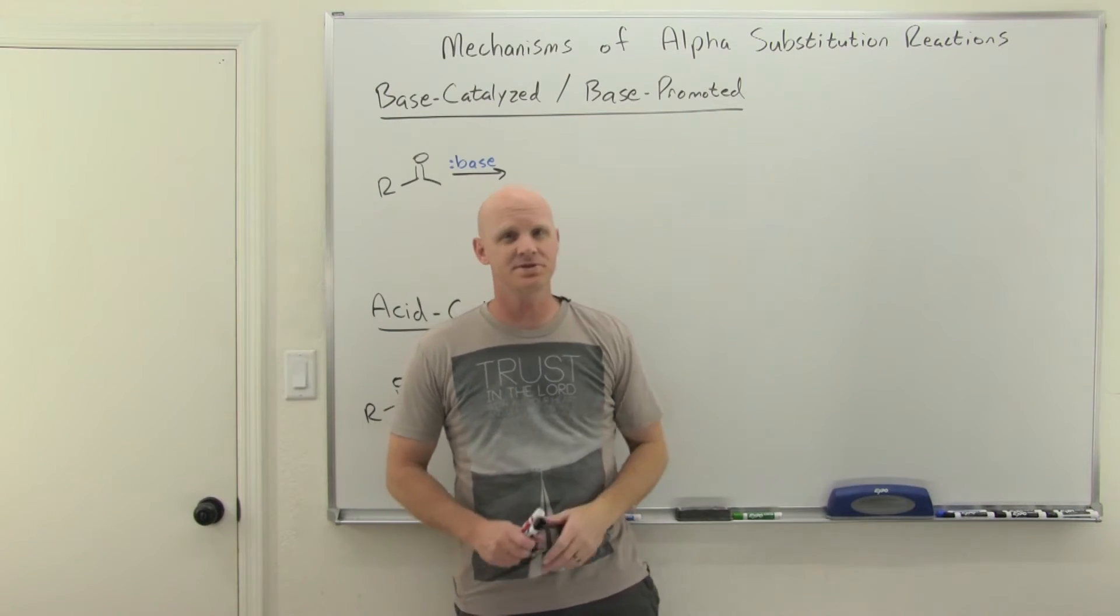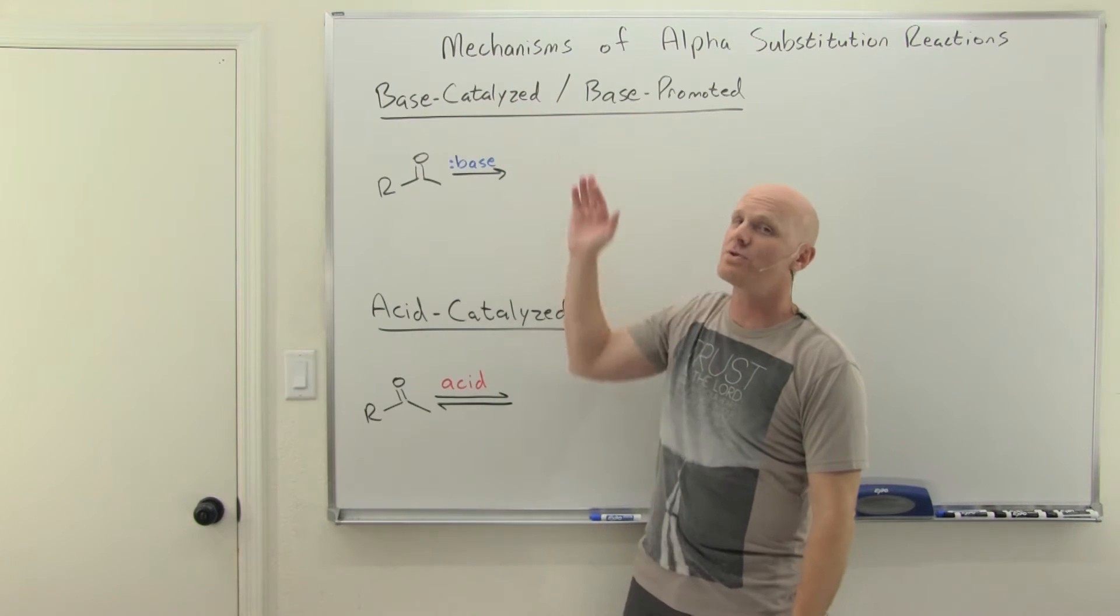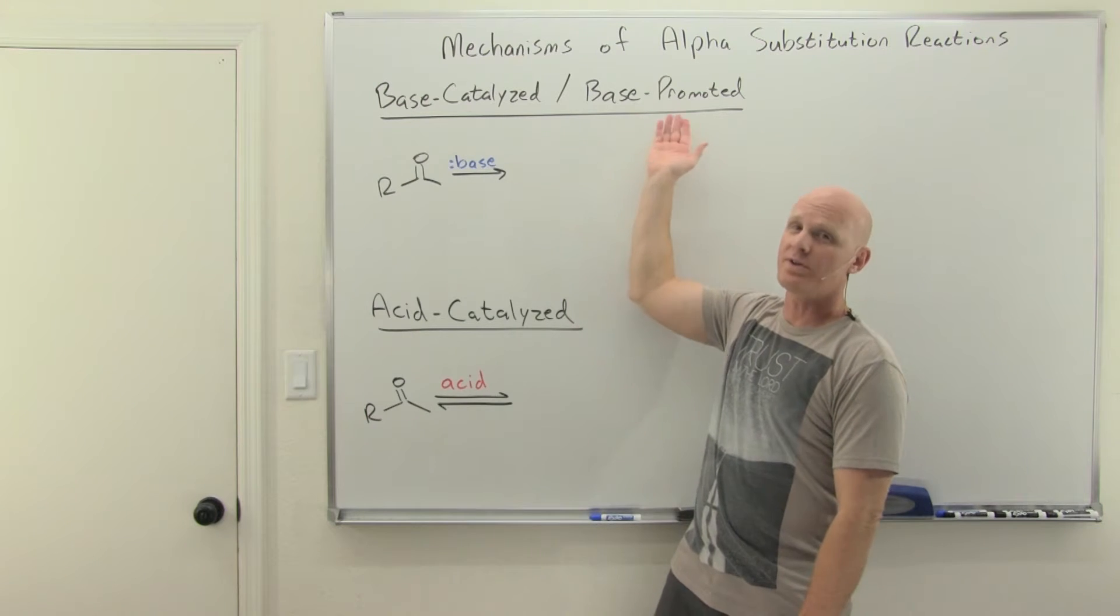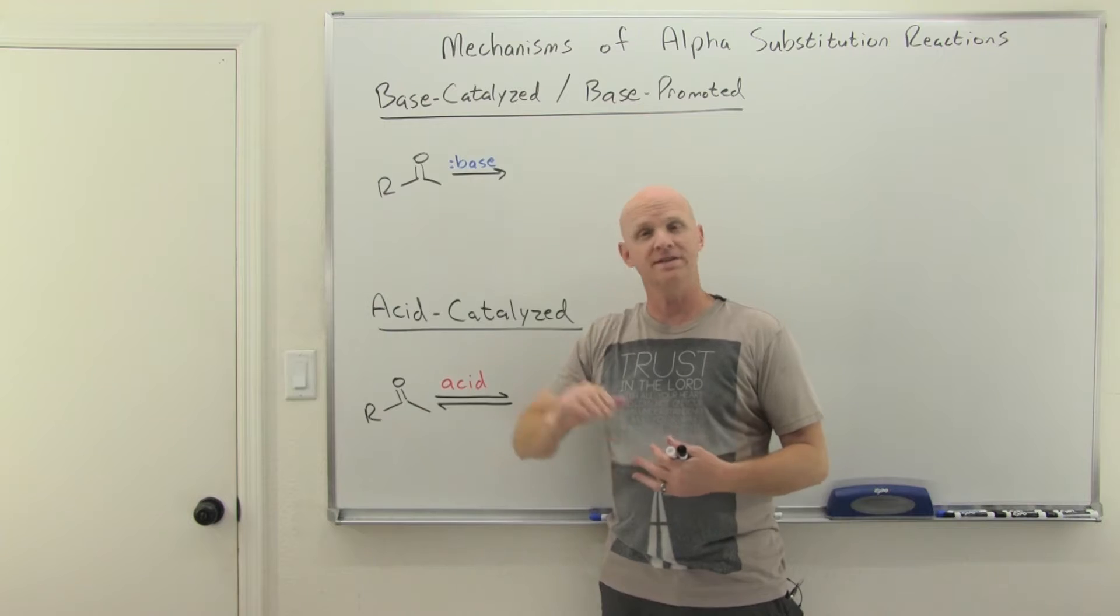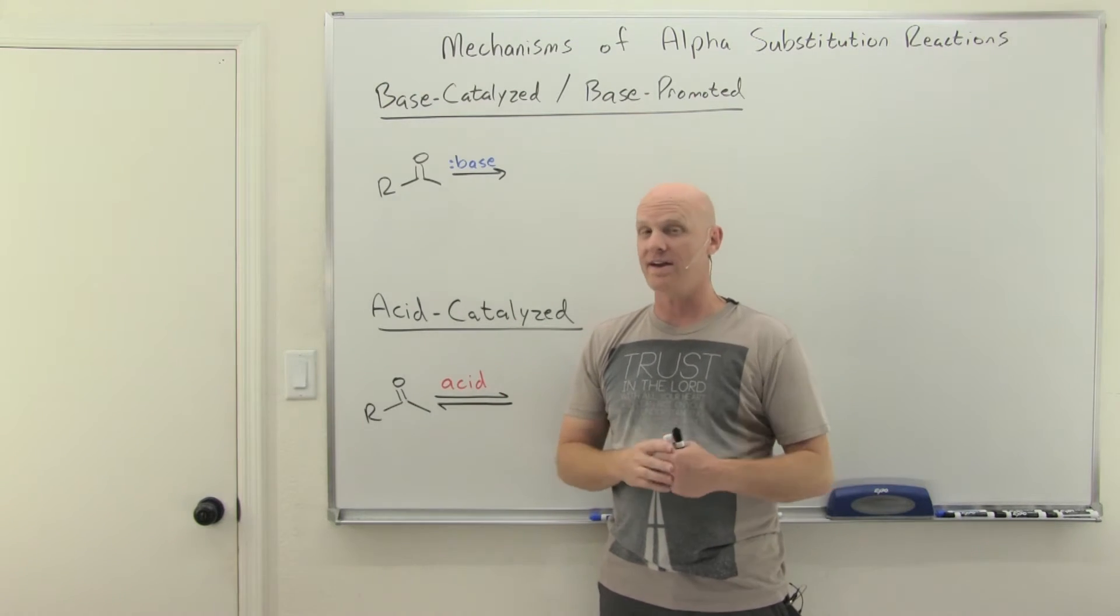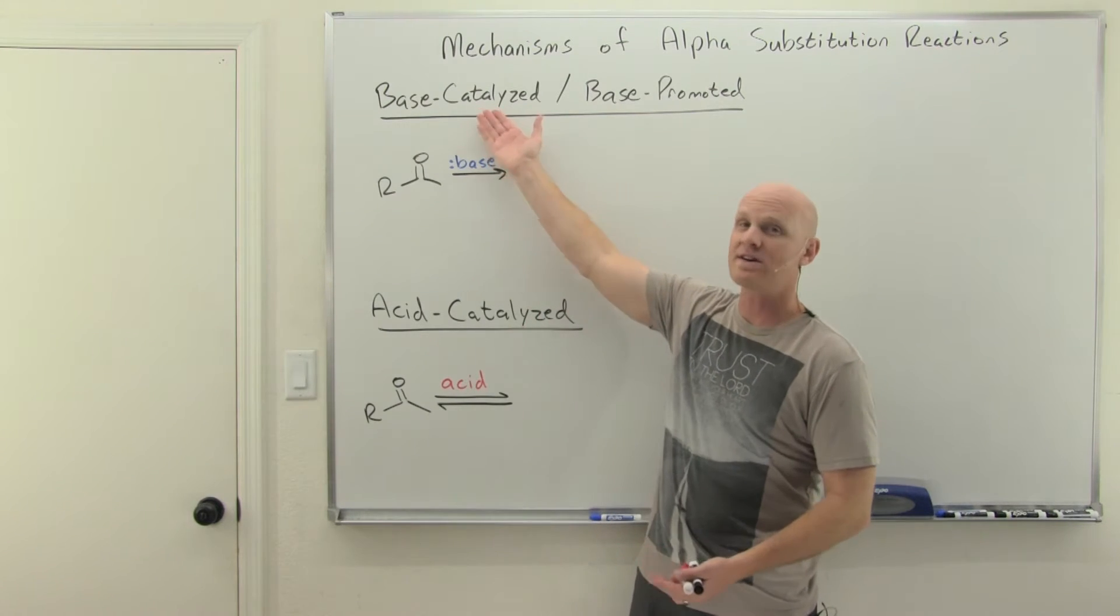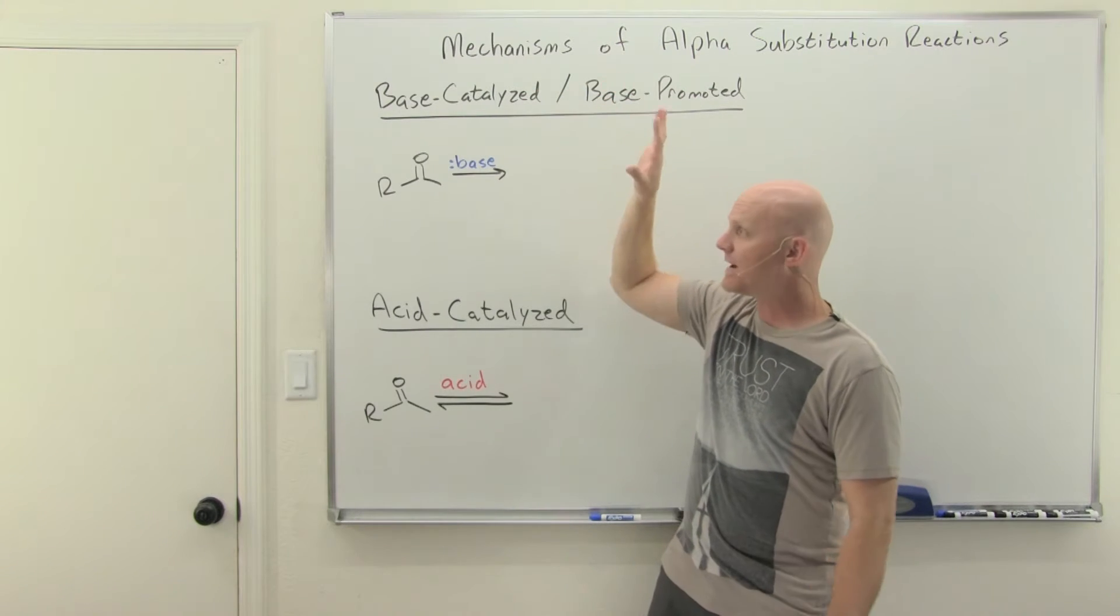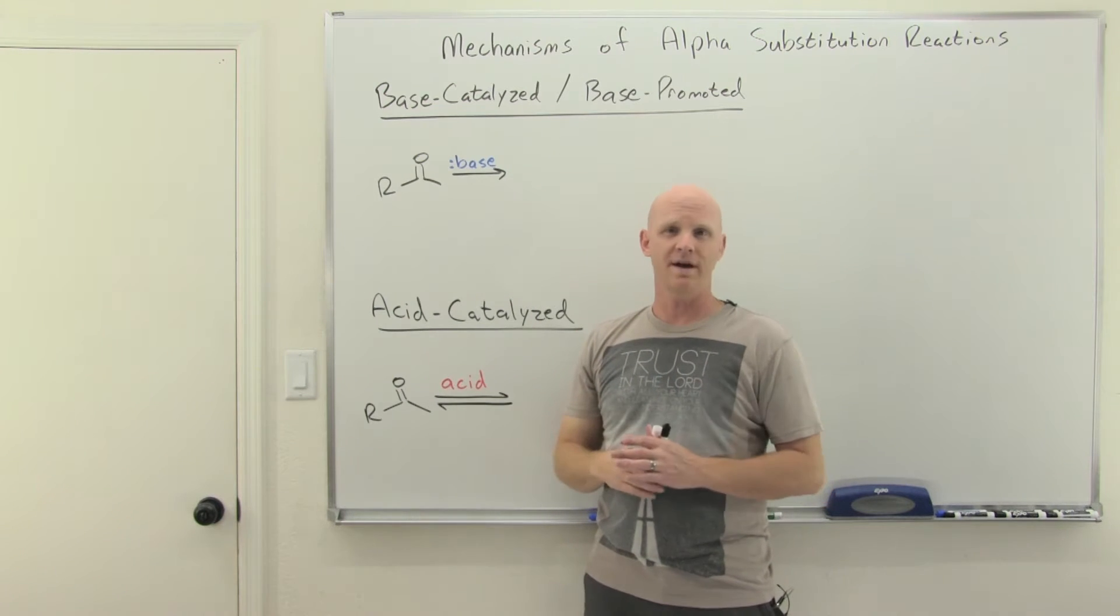The mechanisms of alpha substitution reactions. We've got two classes of mechanisms: those that are base-catalyzed and those that are acid-catalyzed. I said base-catalyzed, but we'll learn that some of them are actually base-promoted, and we'll find that it actually consumes an equivalent of base. The base doesn't get regenerated, it gets consumed in the reaction. We really couldn't call it a catalyst in that case, as a catalyst doesn't get consumed in reaction. But whether it's base-catalyzed or base-promoted, the mechanism is going to largely work out the same, so I'll just combine them into one general mechanism here.